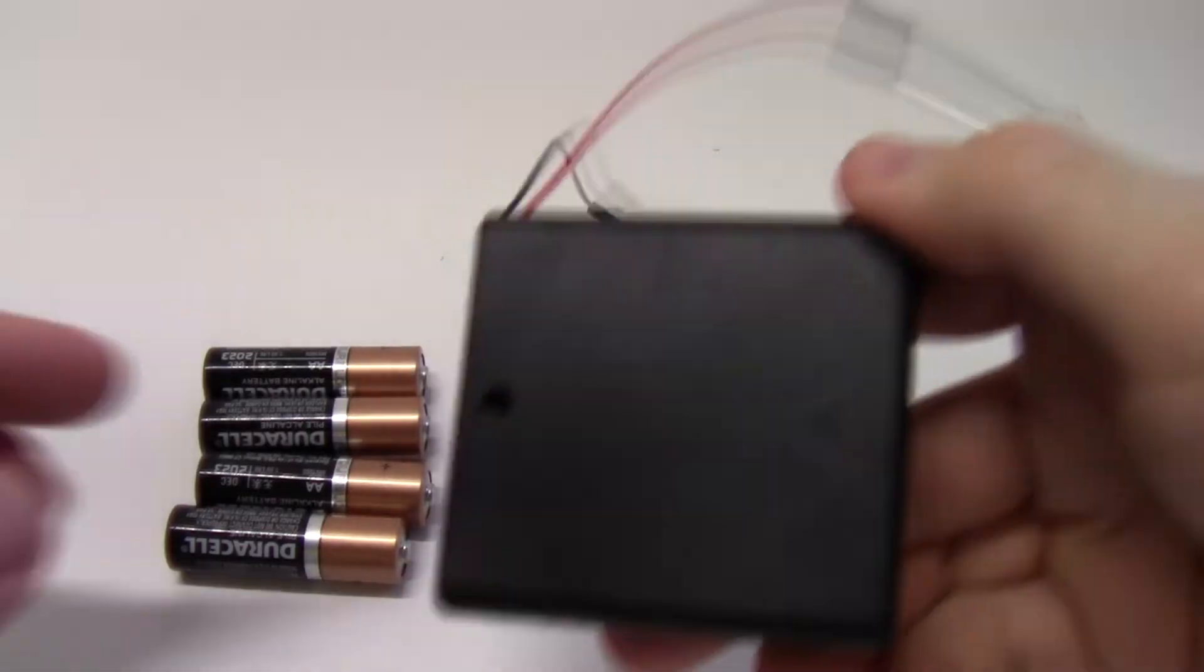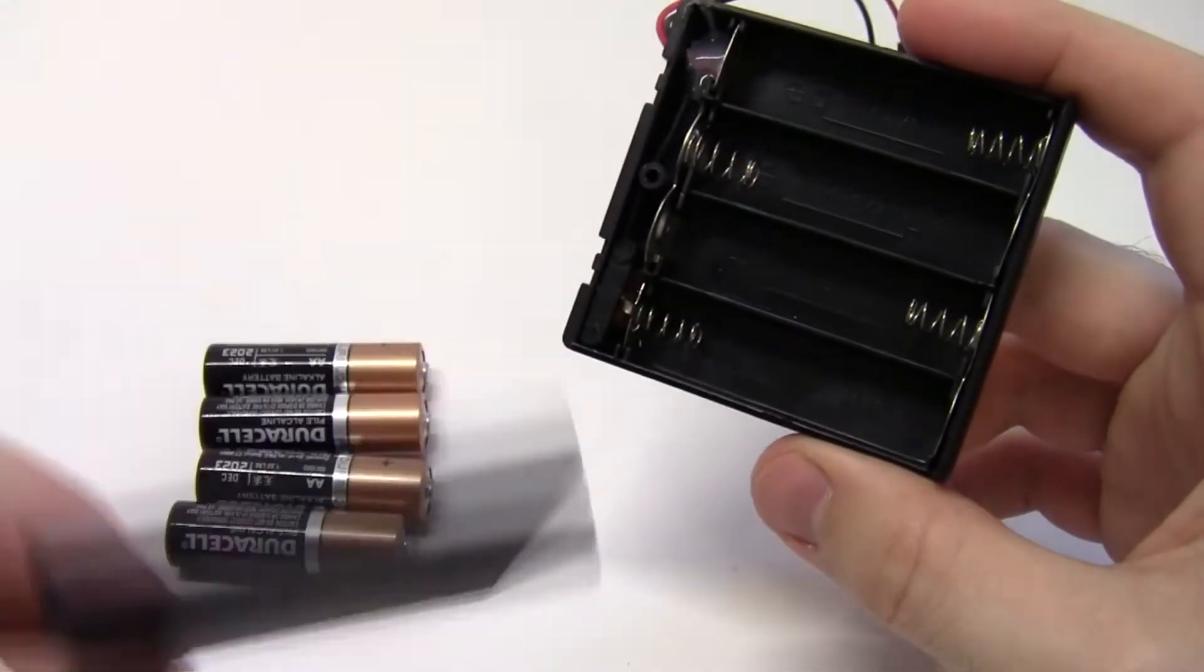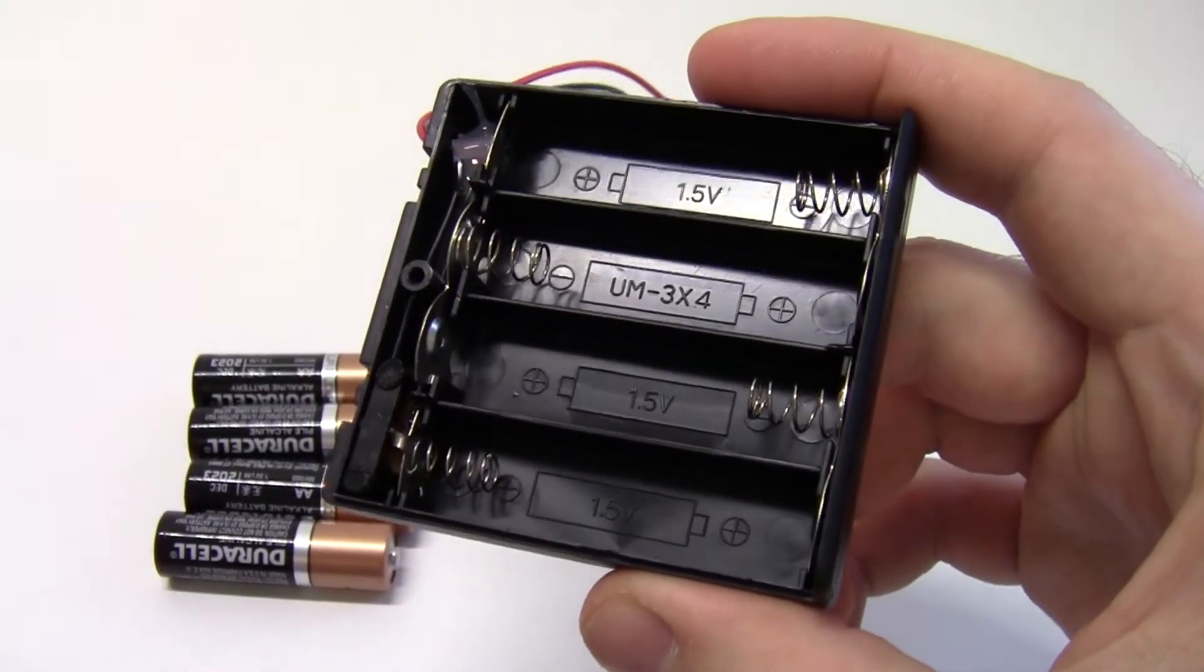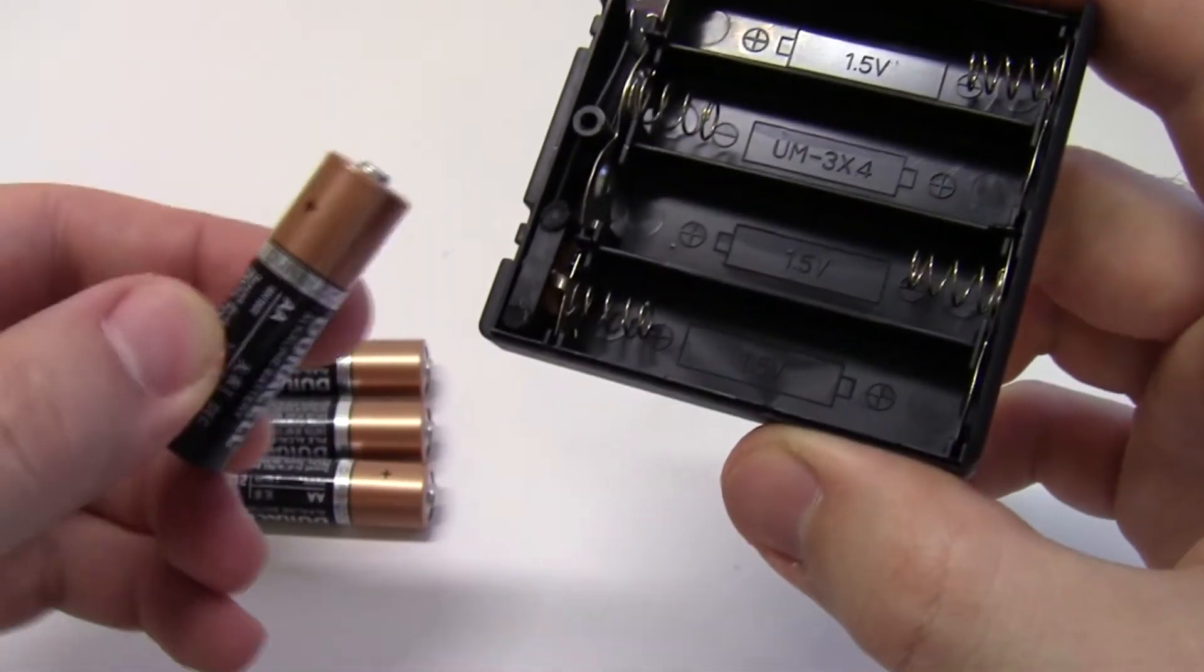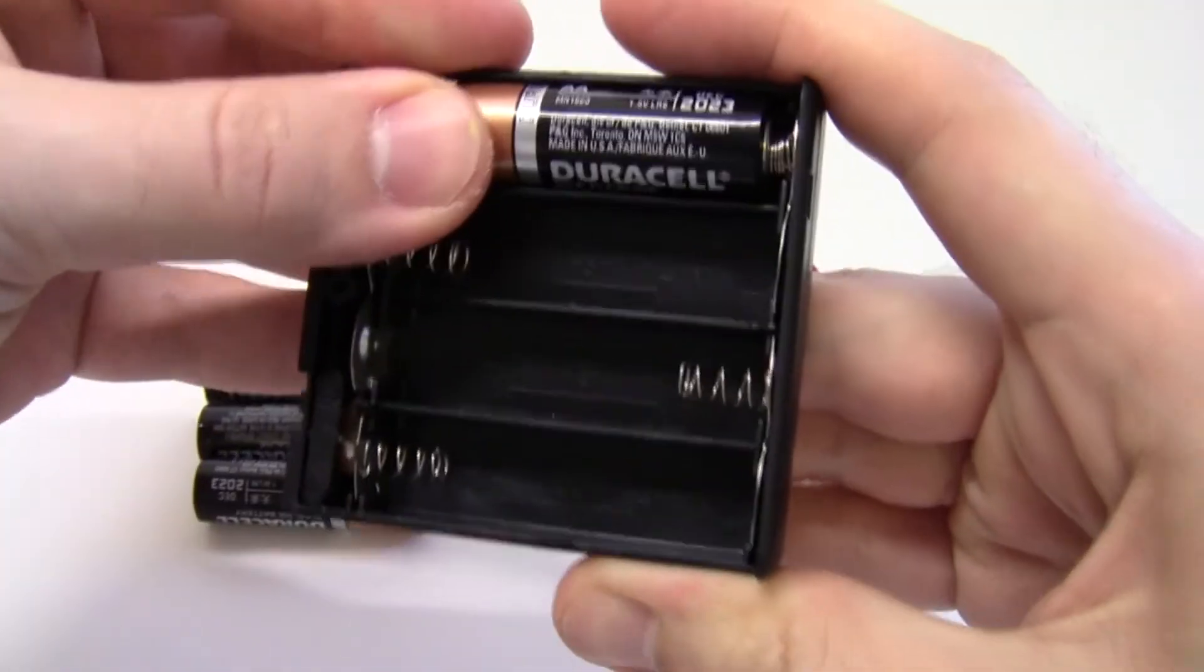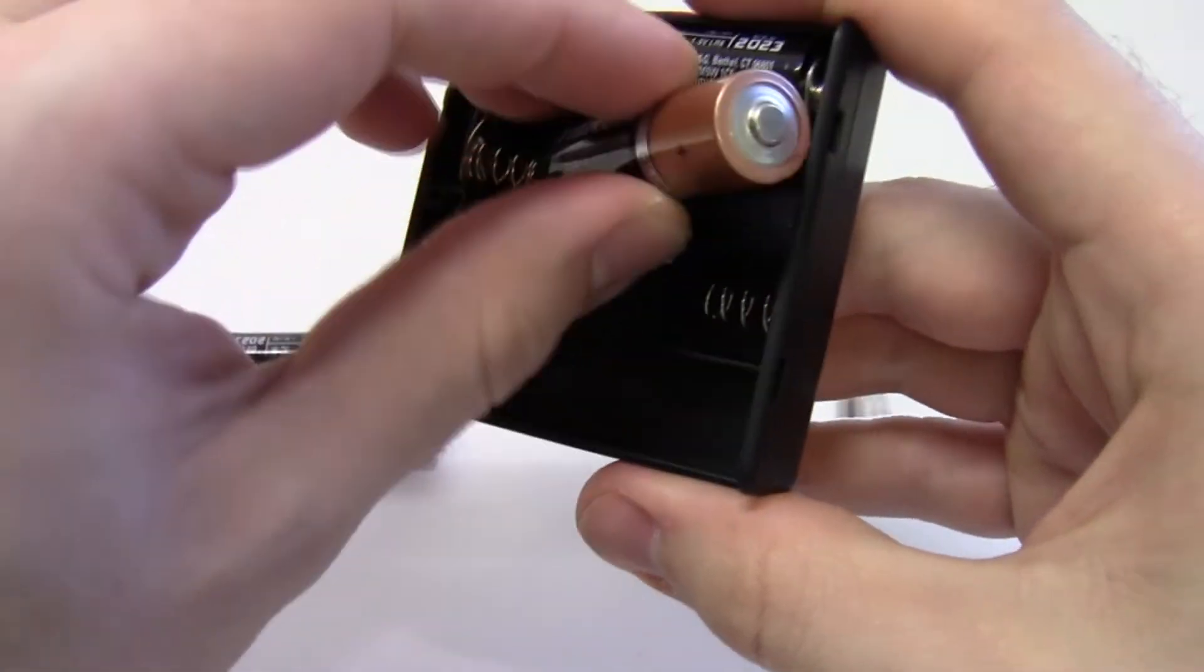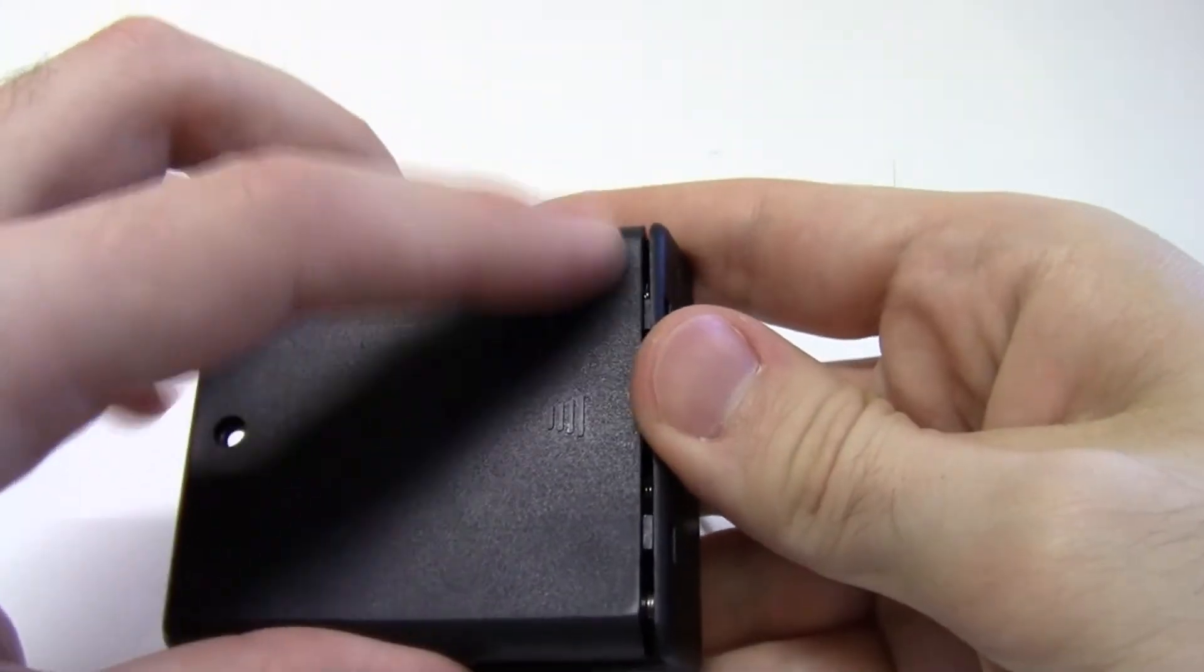Putting the batteries into the battery pack works just like any other toy or TV remote or battery powered device that you've probably used before. Simply pop the back cover off of the plastic case, and then insert the batteries into the battery pack, making sure that the plus symbols on the batteries line up with the plus symbols on the inside of the case, and then when you're done, pop the back cover back on. You should hear it click into place and then you're all set.